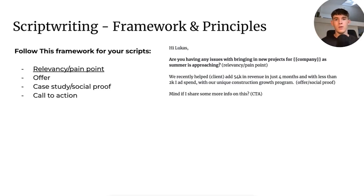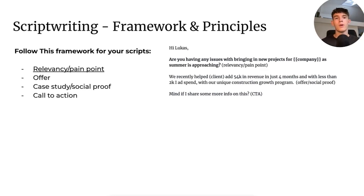Here's what it would look like in an actual email. It starts off with: 'Hi Lucas, are you having any issues with bringing in new projects for your company as summer is approaching?' This is for construction businesses where summer might be a time when it's harder to bring in projects, which you leverage in your copy. Knowing your ICP that well and understanding their pain point with a relevant first line can be massively beneficial. After that, you go into your offer plus social proof — for example: 'We recently helped our client add 54K in revenue in just four months with less than 2K in ad spend with our unique construction growth program.' You end the email with a soft call to action like: 'Mind if I share some more info on this?' They'll simply say sure or no thanks.